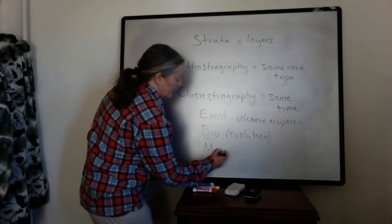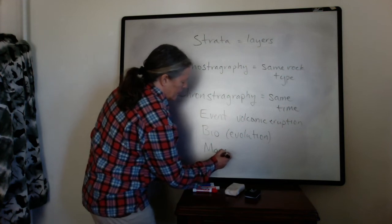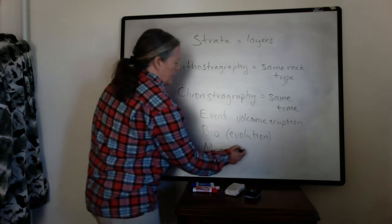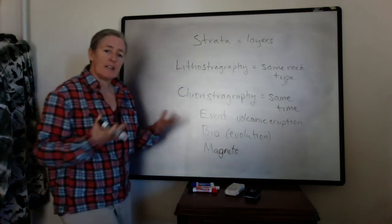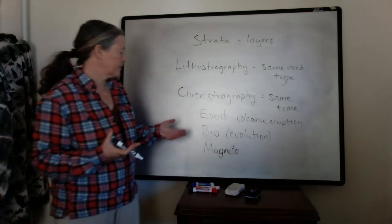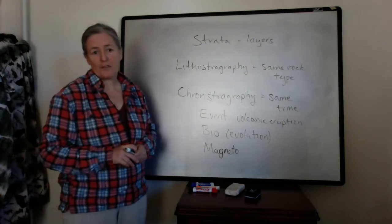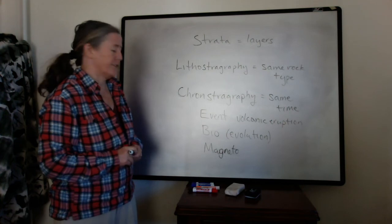The Earth's magnetic field changes, and when it reverses direction, that happens across Earth nearly geologically simultaneously. So magnetostratigraphy is another subset of chronostratigraphy.